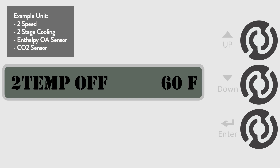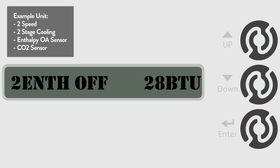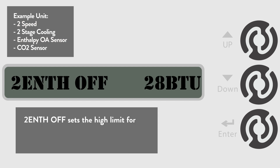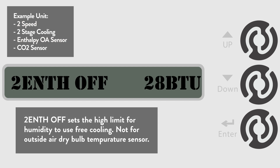Go to the 2ENT off menu. This sets the outside air humidity limit where the economizer free cooling is locked out. The default is 28 BTU per pound, but we will change the setting to 25 BTU per pound.